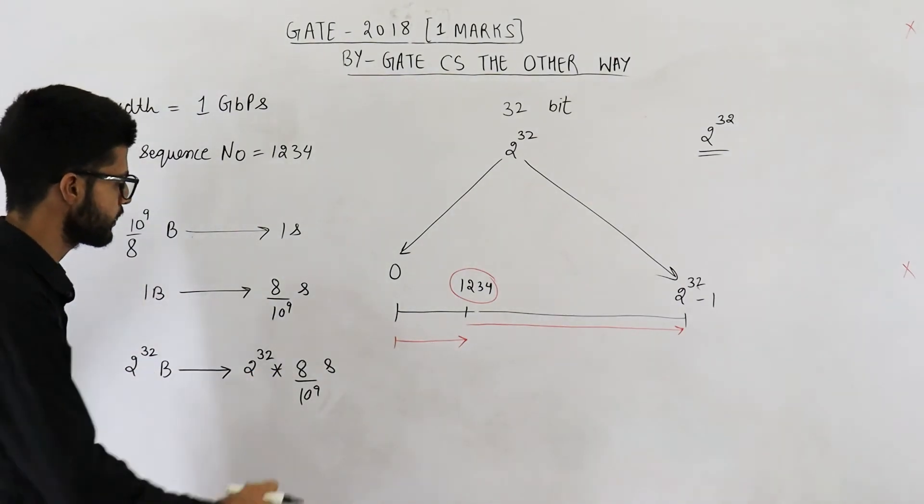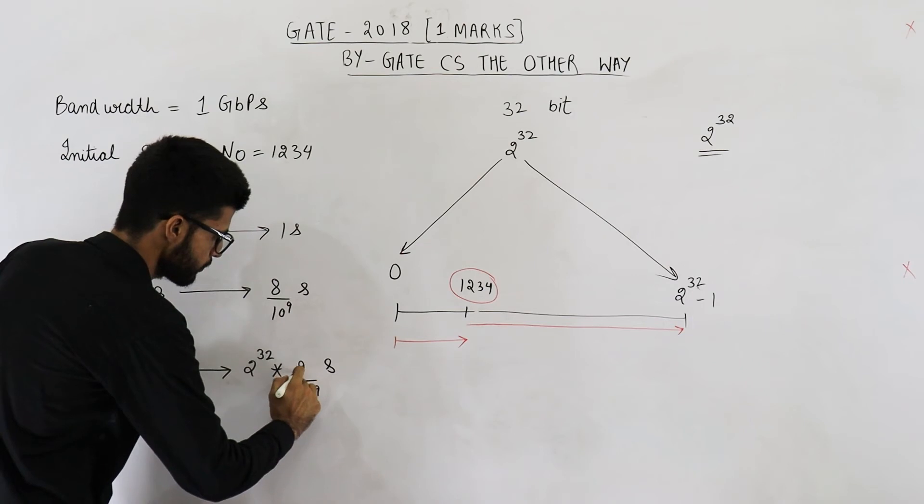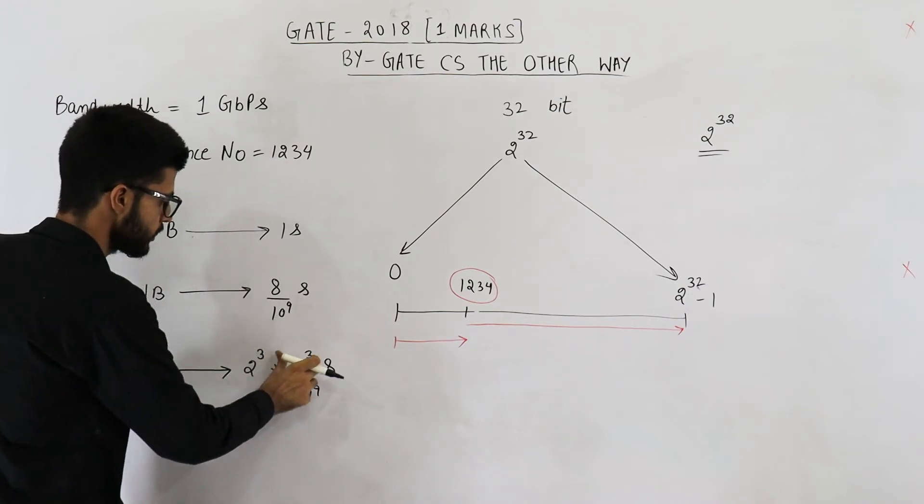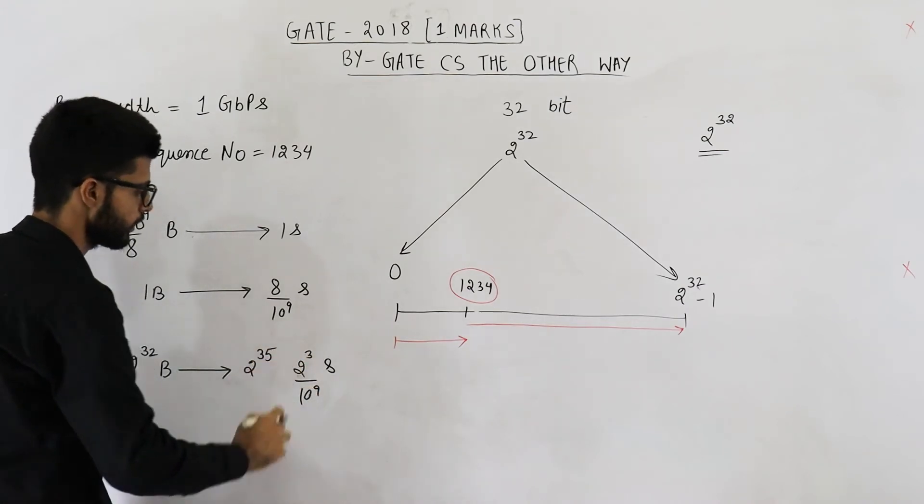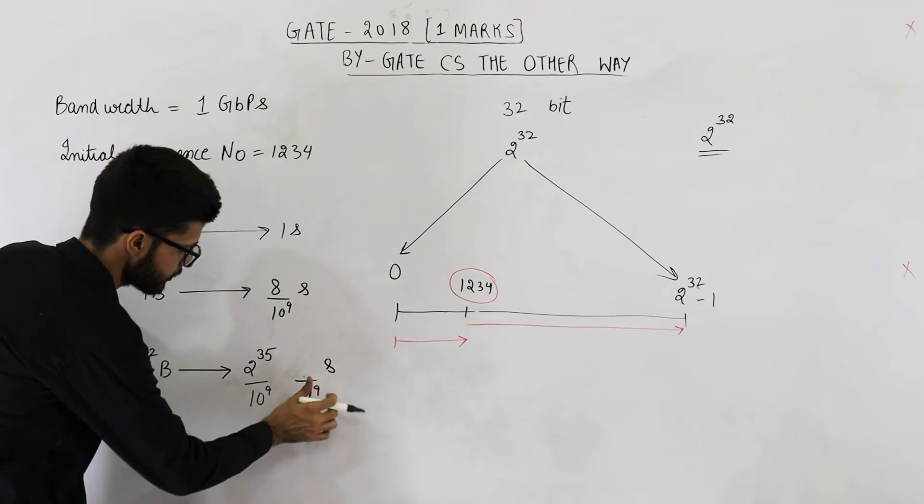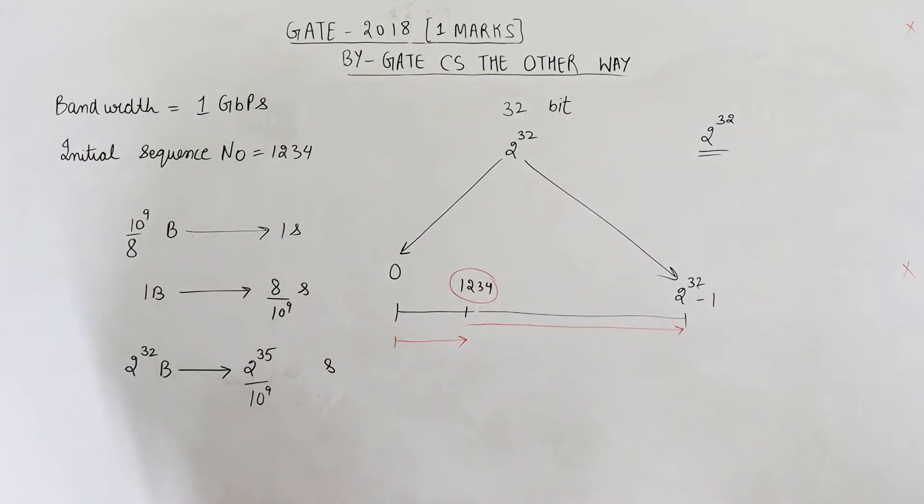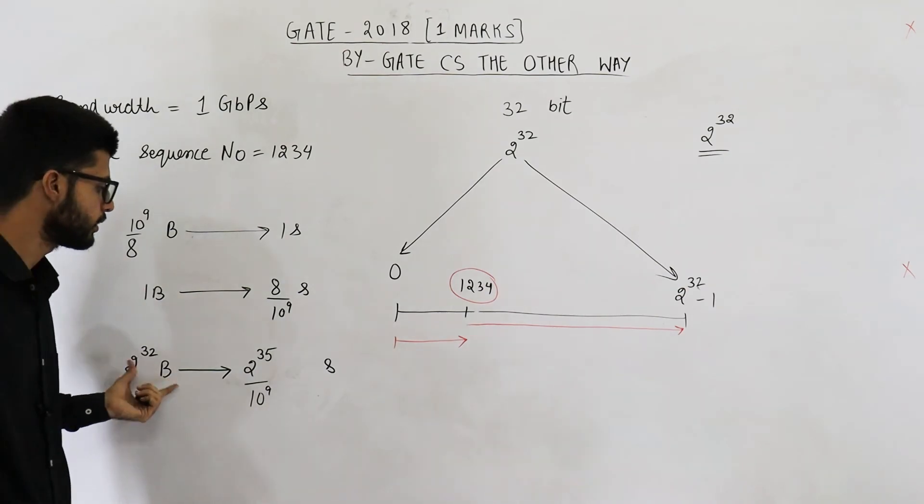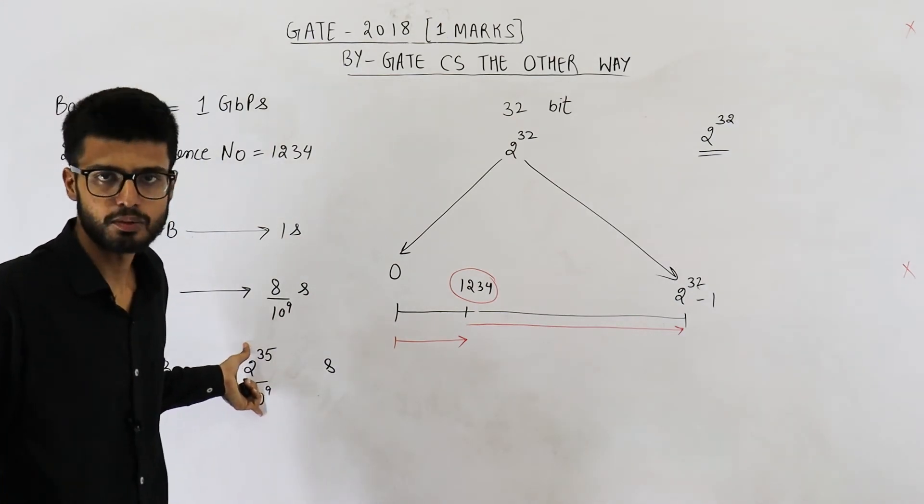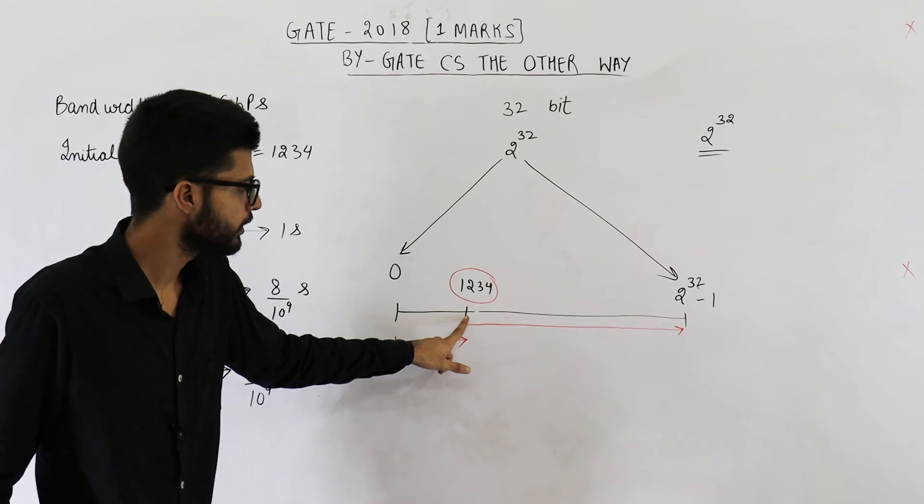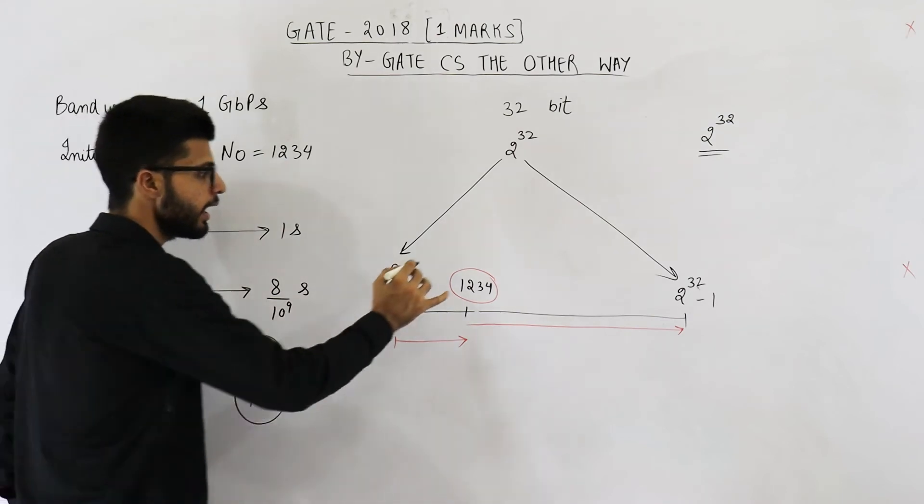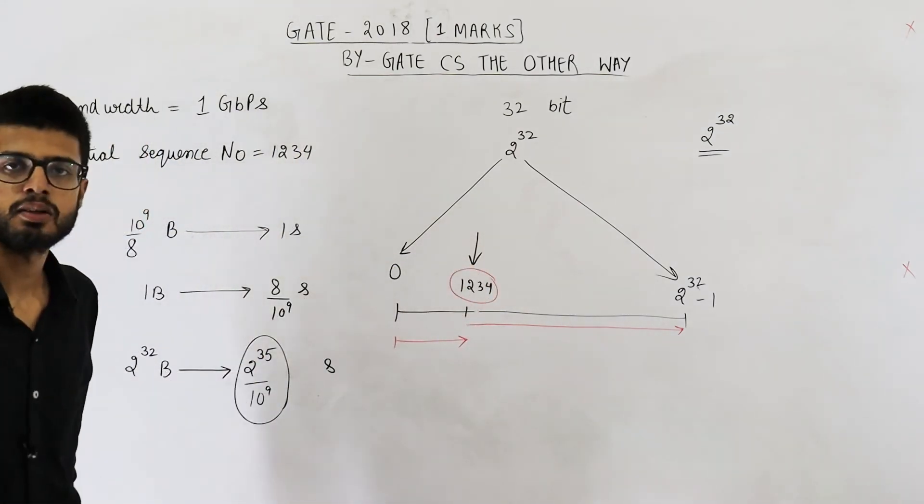So 8 can be written as 2 raised to the power 3. If you multiply both of them, you are going to get 2 raised to the power 32 plus 3 which is 2 raised to the power 35. Like this. Divided by 10 raised to the power 9 is left as it is. These many seconds. Now, 2 raised to the power 32 bytes will be transferred in these many seconds. Every byte will take one sequence number. That means, if you start from here, 2 raised to the power 32 sequence numbers will be used in this much time. And again, you have to repeat this one. So this is the answer to this question.